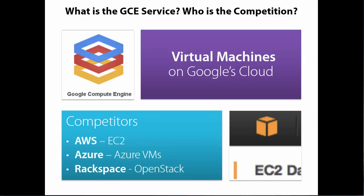The starting point for many people on the cloud is virtual machines, so we're going to start there with Google's cloud as well. A recent update to their services: their virtual machines, called Google Compute Engine, went GA — general availability — coming out of beta. This happened in the past quarter, and I'm recording this in January 2014. Their big competitors are Amazon EC2, Azure VMs, Rackspace, and others. I'm going to point out some differences between GCE and EC2 because as architects, I think that's important for us to understand.